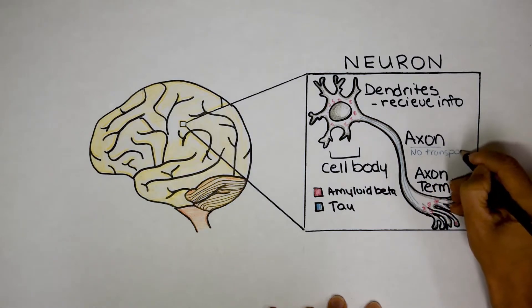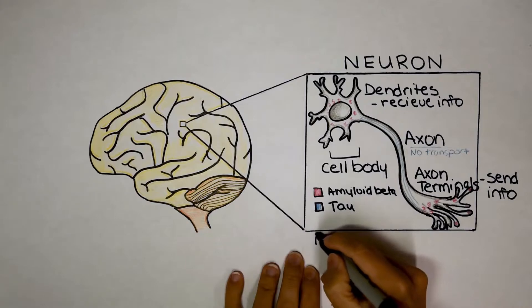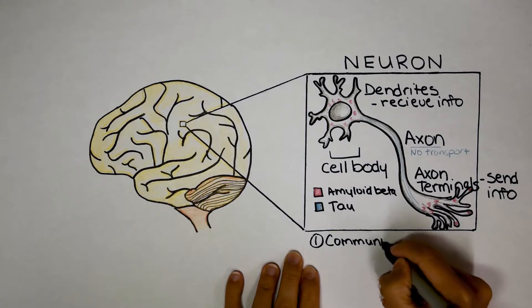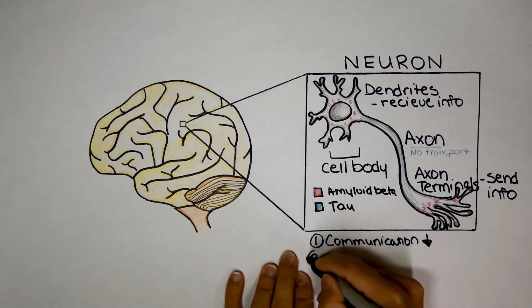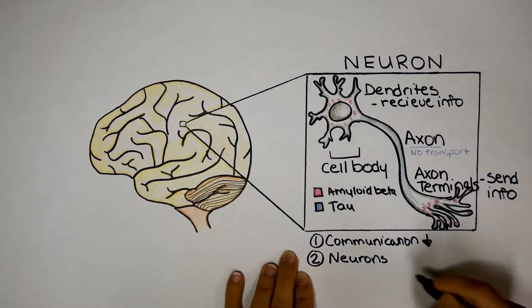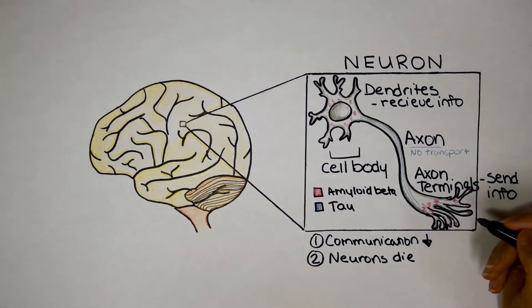So between amyloid beta and tau, the neuron initially is slowed. So first off, communication is slowed. And then secondarily, the neuron will die. Now as we age, we don't replace the neurons in our brain at a very high rate. So the neurons in our brain cannot be recovered with any of the techniques we have available.